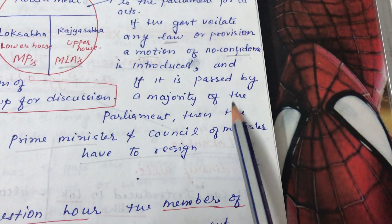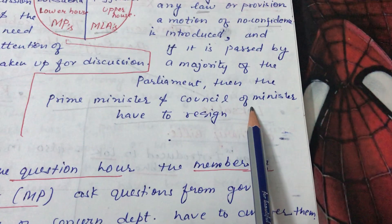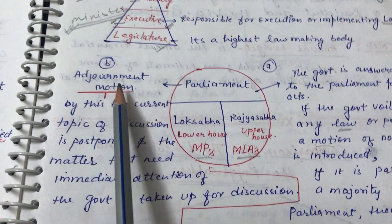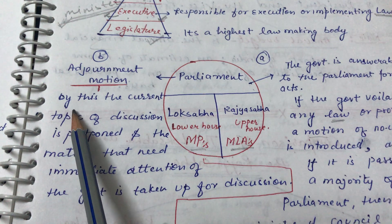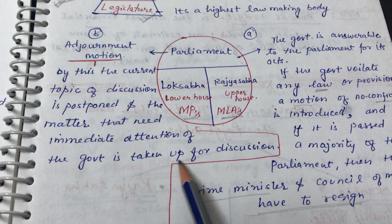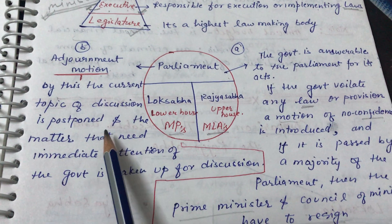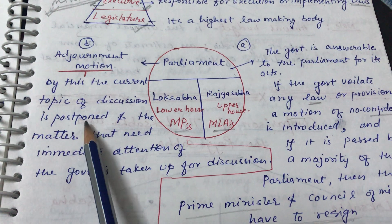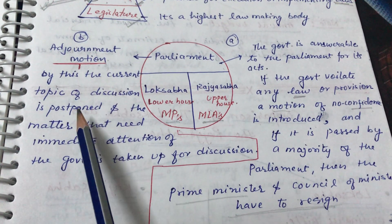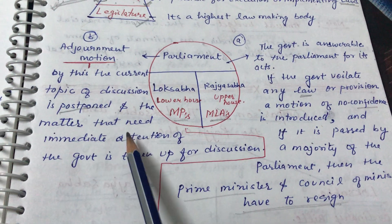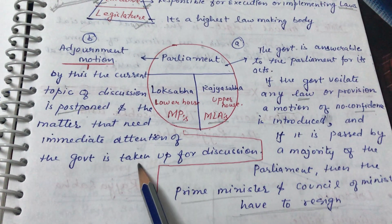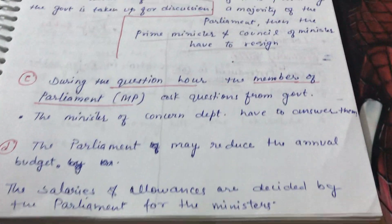Another right of Parliament is the adjournment motion. By this motion, the current topic of discussion is postponed and a matter needing immediate attention is taken up for discussion. If there is an important issue that arises while Parliament is discussing something else, the presiding officer or speaker has the right to postpone the current matter and immediately take up the urgent topic.